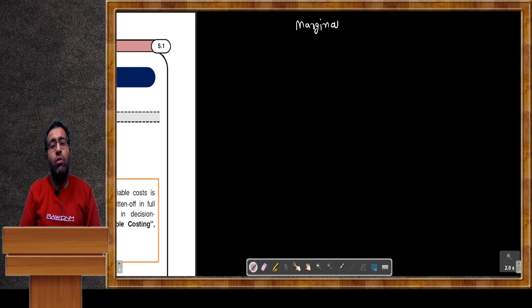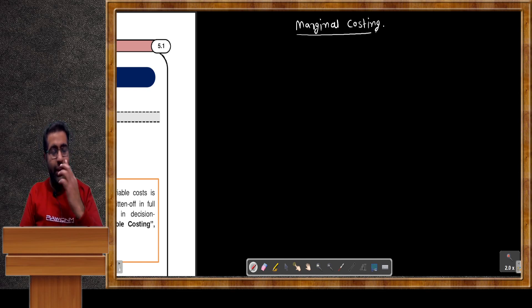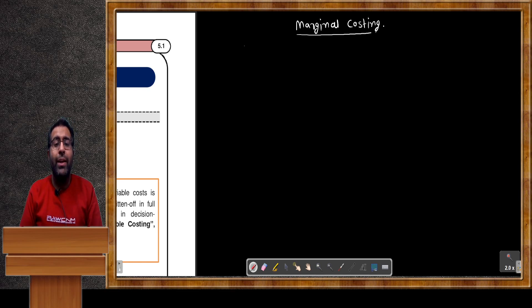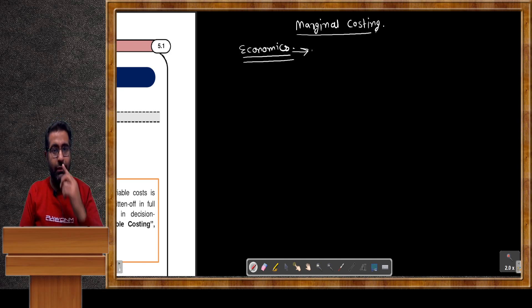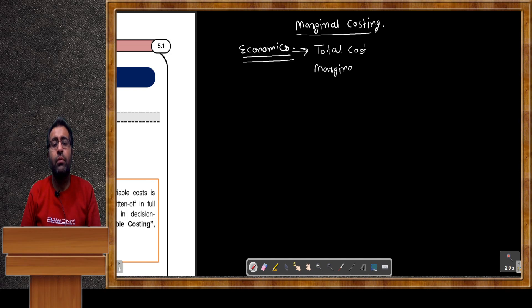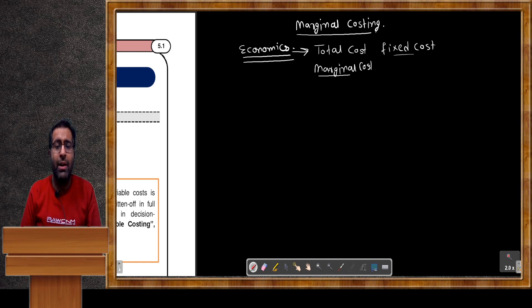What do you mean by marginal costing? When we start any topic, a question arises in everybody's mind: why are we studying this and what is the meaning of it? So just recall your past. In economics, as in your exams for SEBI Grade A and B, there is a whole syllabus concerned with economics. In economics, we have read about total cost, marginal cost, and fixed cost.